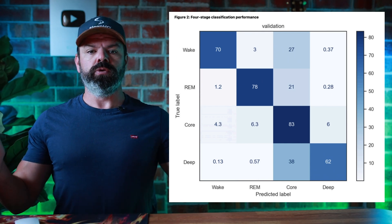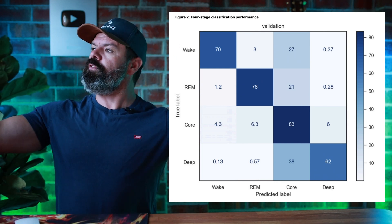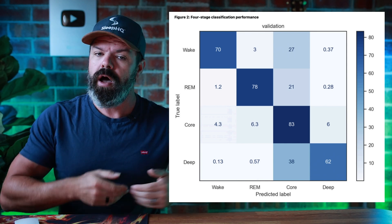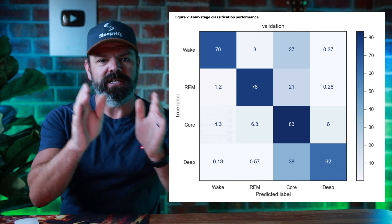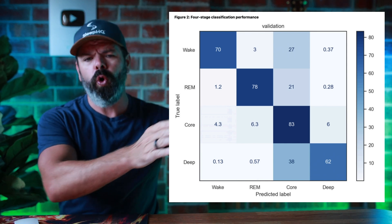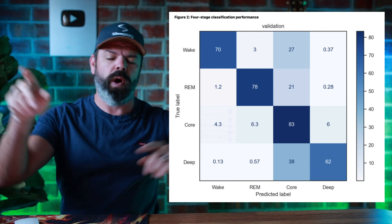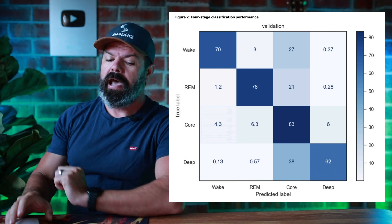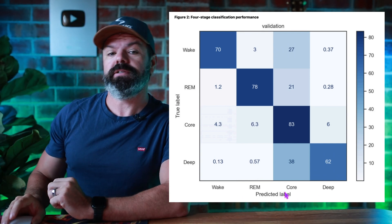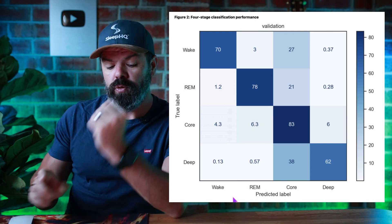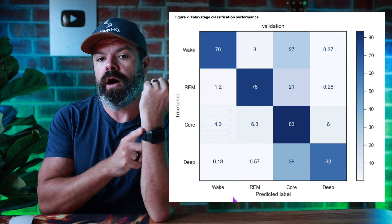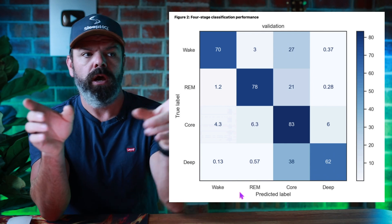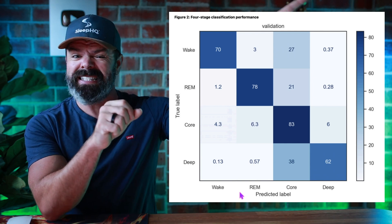Up the y-axis here we have the true label — the shining beacon of truth — sleep scientists like myself marking different stages of sleep: core, REM, deep, and wake. Truth, truth, truth, truth. And along the x-axis we have the predicted label from the Apple algorithm. What we're looking for is alignment — when I say it's deep sleep, I want Apple to say it's deep sleep also.